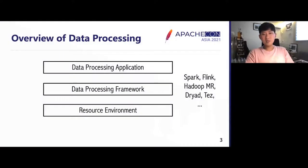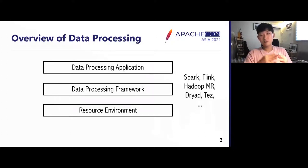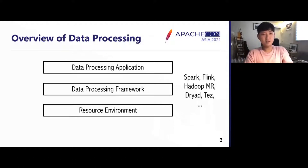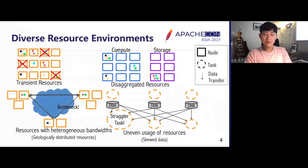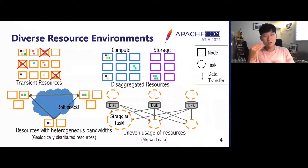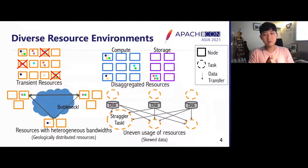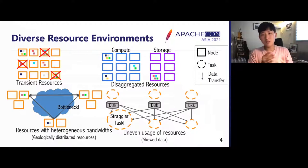Let's get a little overview before we get started. We know how data processing works: first there's a data processing application coded with frameworks like Apache Beam or Spark, then there's a bunch of different data processing frameworks with different designs, and there's a pool of computing resources to run these applications. The thing is that such resource environments are not just uniform and identical — there are a lot of different types of resource environments where such differences become problems in existing data processing frameworks.